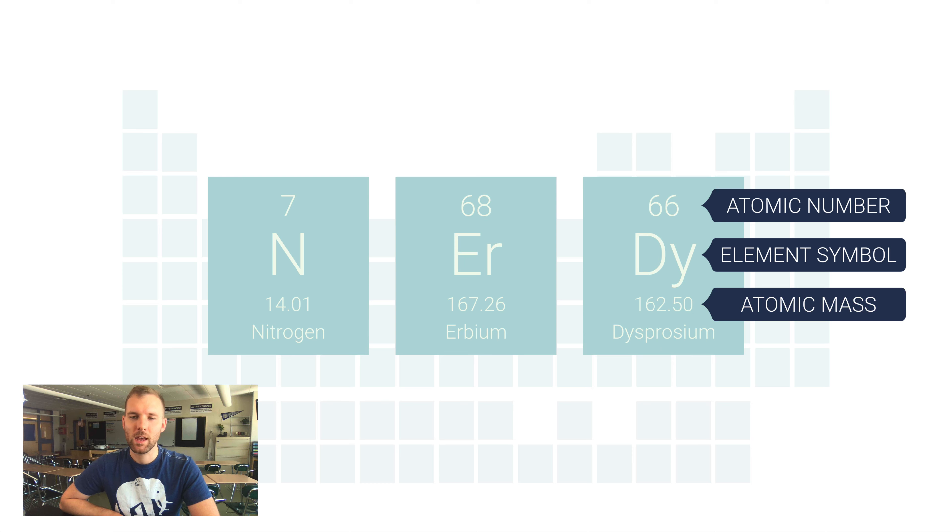The third piece of information that's on every periodic table in every box is the atomic mass. Now this is the average atomic mass of all of the isotopes of that particular element found on earth. We actually just covered a video on calculating atomic mass, so you can check that out if you need a refresher or haven't seen it yet.